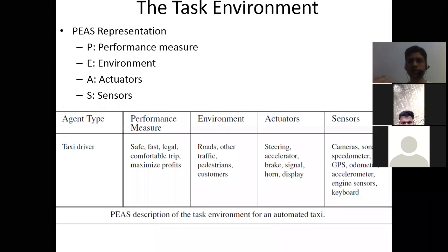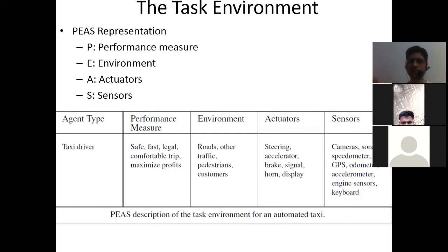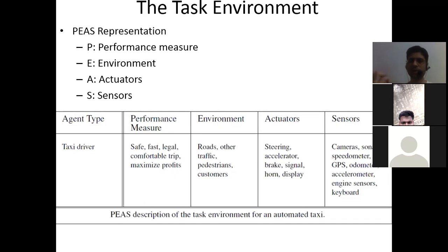The sensors — input devices through which the agent perceives its environment — include camera, sonar, speedometer, GPS, odometer, accelerometer, engine sensors, and keyboard. The speedometer shows how fast the vehicle is running. A student suggested that the odometer measures distance traveled, which is correct — it measures the distance your vehicle has traveled, in kilometers or another unit.